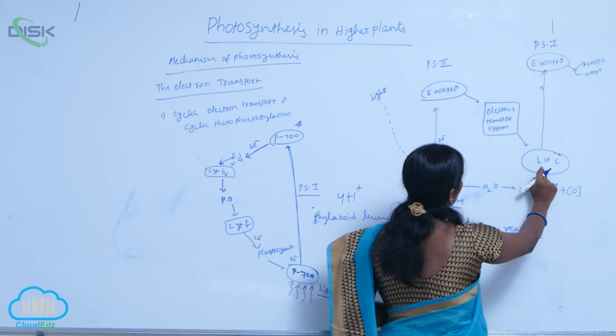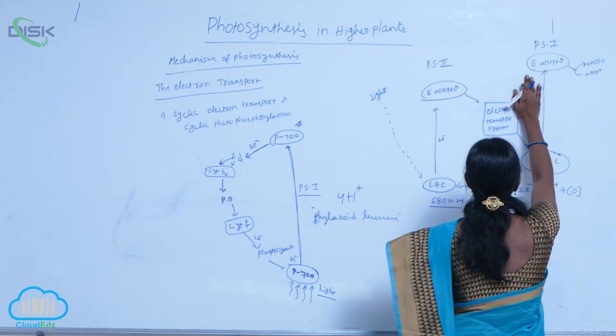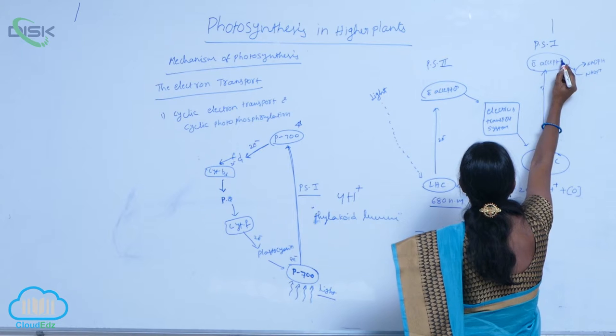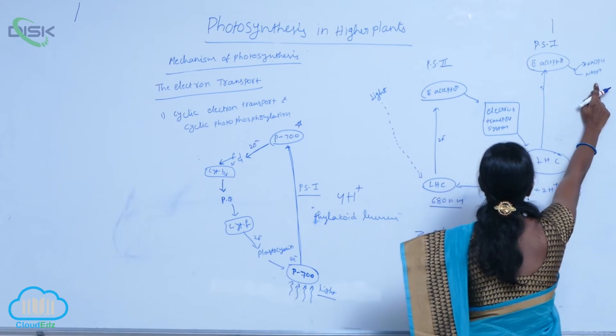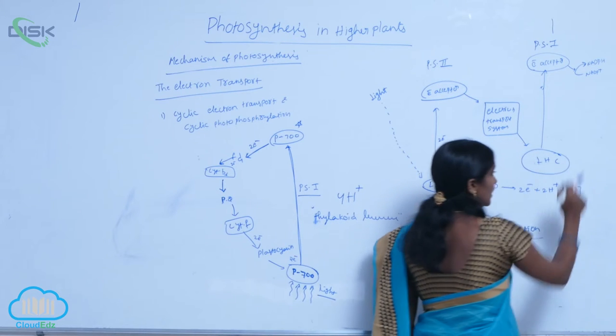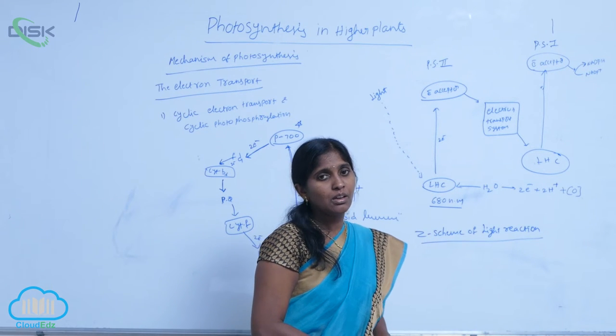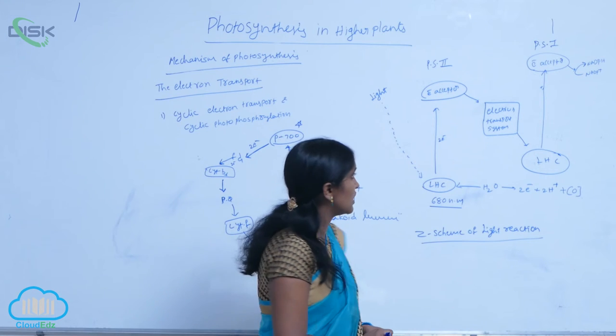From PS1, electrons are transmitted to electron acceptors. Finally, NADP+ is reduced to NADPH in the presence of NADP reductase enzyme.